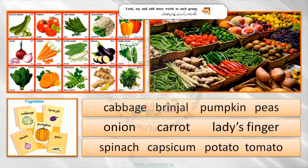Spinach means palak. Capsicum is what we call simla mirch. Potato, tomato, ladies' finger means bhindi. Keep your attention — there are also names here in the pictures like cauliflower, ginger, peas, and other vegetables. You can see so many other vegetables and add more with the help of your teacher.